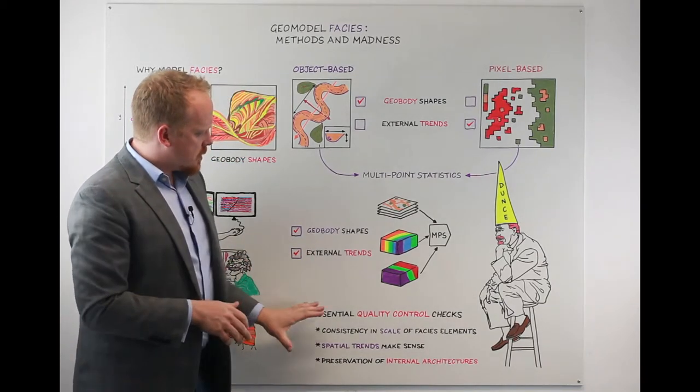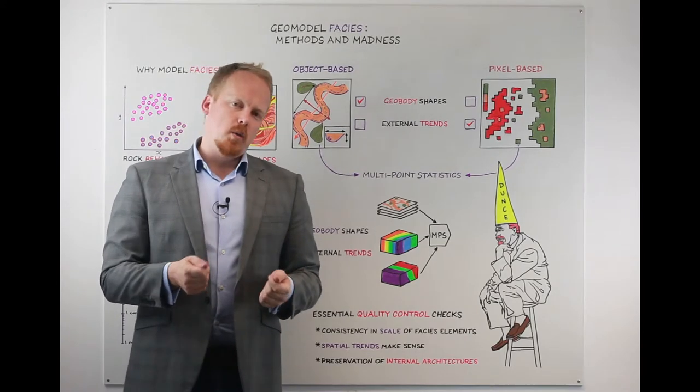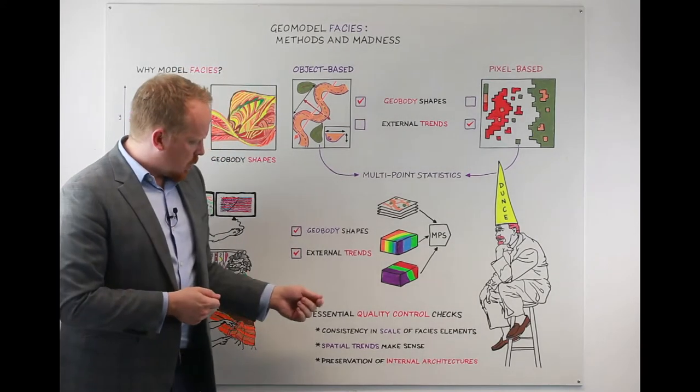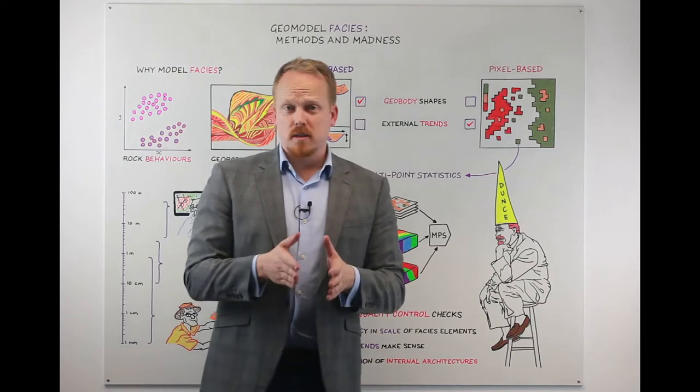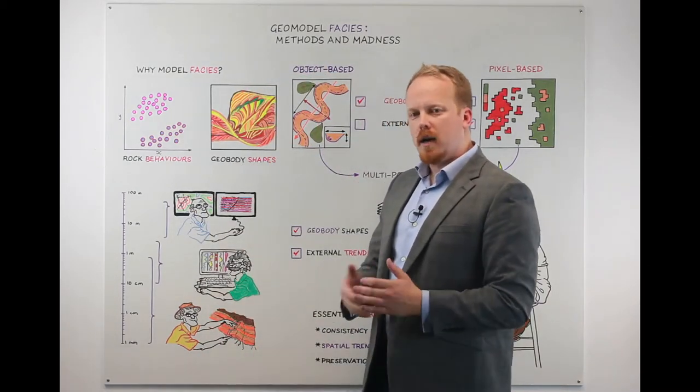But at the end it's important that we have a good set of quality control checks to make sure we're getting what we want out of our model. We want to make sure that we have the consistency of the scale that we had at this conversation preserved inside our modeling methods.